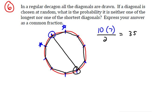So there are 35 total diagonals in a decagon. The formula, if you want to know it, is n times n minus 3 over 2.